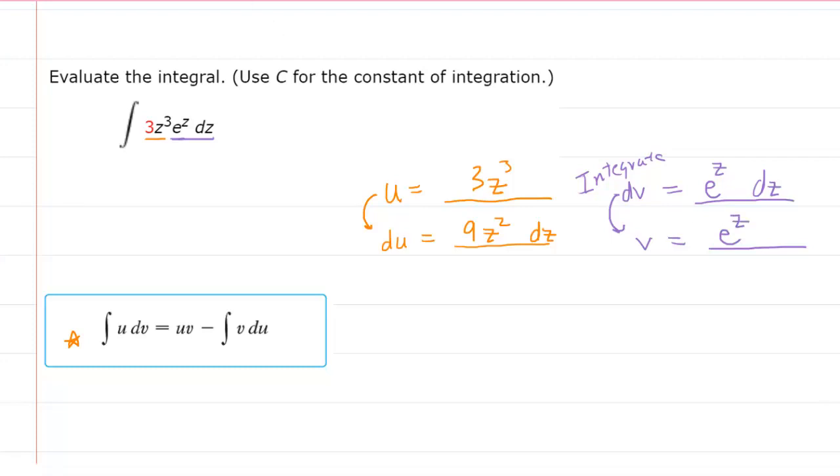Now that we have those four parts, we can go over to the formula and plug them in. Following along, we have the integral of u, which we called 3z cubed, times dv, which from our chart was e to the z dz. You will perhaps notice that this is just the original problem. So there's nothing surprising right there. But it's the other side of the equation that is most significant for us.